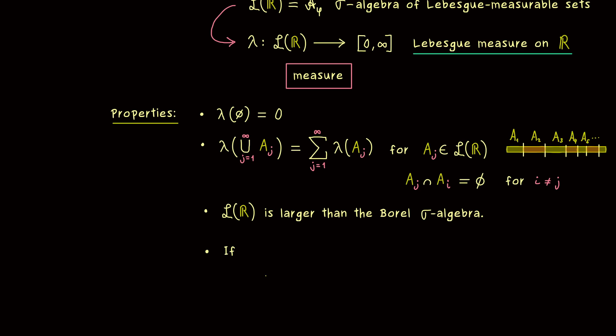So in particular, we know that all open and closed sets in R are measurable. Moreover, we can say a lot about sets with measure 0. So if the length of A given by the Lebesgue measure lambda of A is 0, then we often call A a null set. Indeed, this is a common term we have in measure theory.